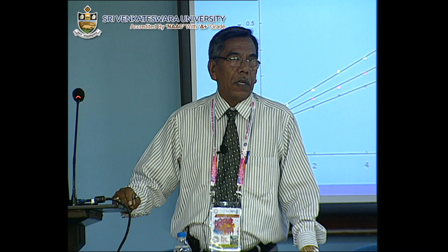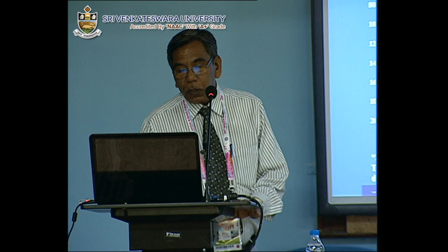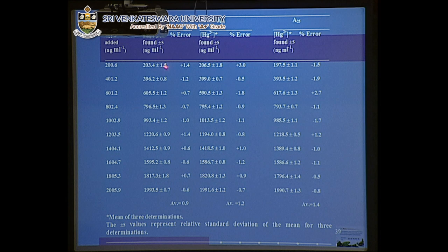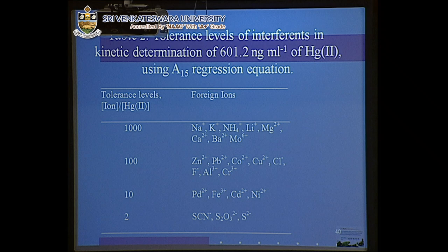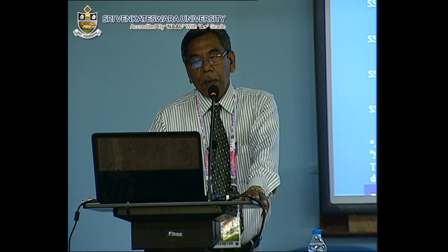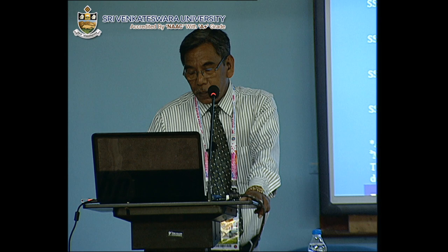This system has a very long range of concentration for determination. Recovery experiments show the relative standard deviation and percentage error from three determinations. The tolerance limits are: up to 1000 times for some species with no interference, up to 100 times for others. Some soft ligands interfere because of the soft acid and hard base principle — they easily complex with mercury. The synthetic sample determination was done after 15 minutes using the 15-minute calibration equation, and this is published data.